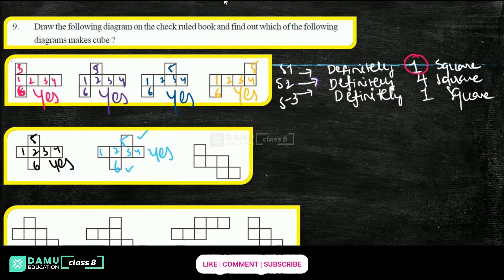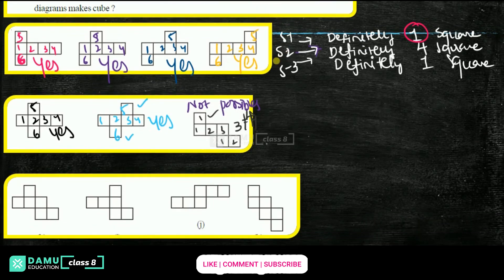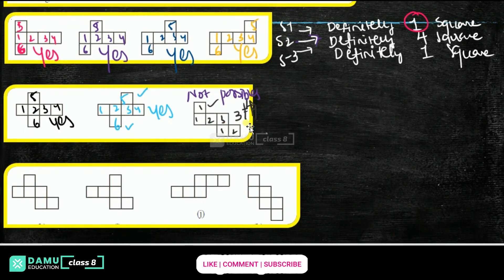Next one: let us check — top one is there, then down, middle only three squares are there. It is not equal to four. So it is not possible to make a cube, because the middle stage — that is second stage — only three squares are there, not four.